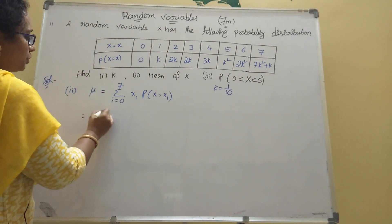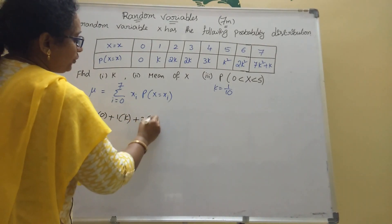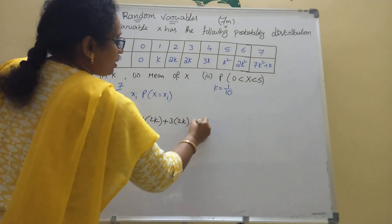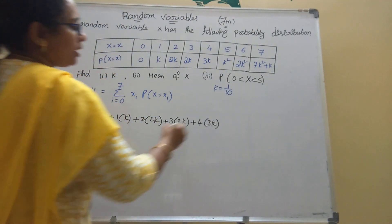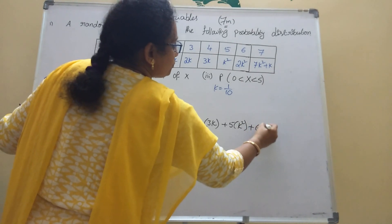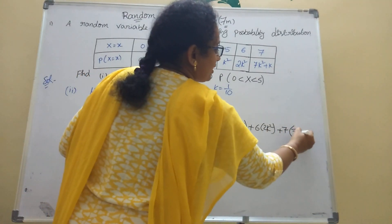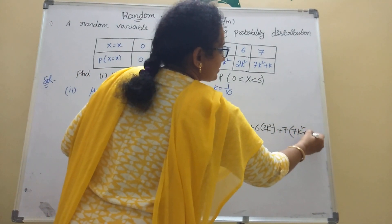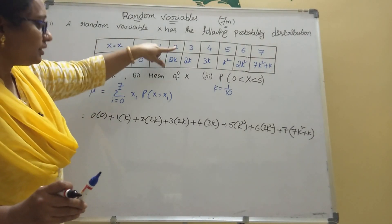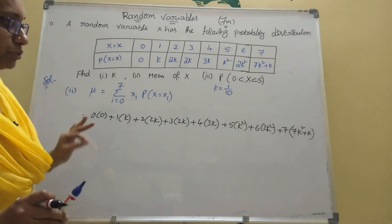Multiplying each x value by its corresponding probability: zero into zero, plus one into k, plus two into 2k, plus three into 2k, plus four into 3k, plus five into k-squared, plus six into 2k-squared, plus seven into 7k-squared, plus seven into k. You should check each step carefully, as each step depends on the previous one.